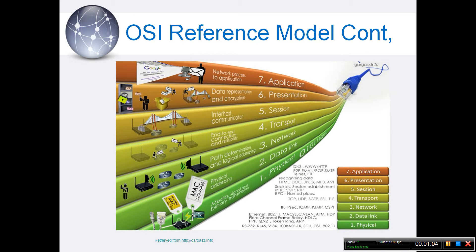Going from the bottom up, Layer 1 is the physical layer. It defines the type of media to be used and the representation of data on the medium. This layer conveys the bitstream — electrical impulse, light, or radio signal — through the network at the electrical and mechanical level. It provides the hardware means of sending and receiving data on a carrier, including cables, cards, and physical aspects. Fast Ethernet, RS-232, and ATM are protocols with physical layer components.